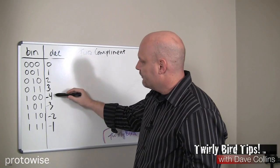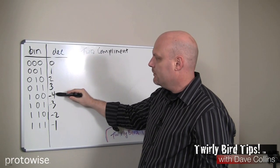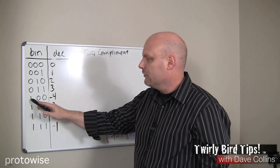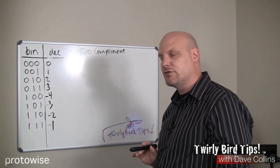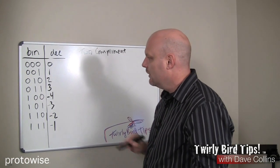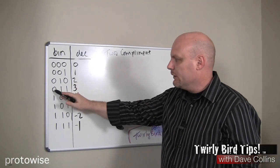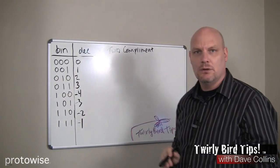And a couple of other things. The smallest negative number, in our case negative 4, in our 3-bit system, will always be represented in two's complement with a leading 1 followed by all 0s. That will be your smallest negative number, always. Your largest positive number will always be, no matter how many bits in your system, a leading 0 followed by all 1s.